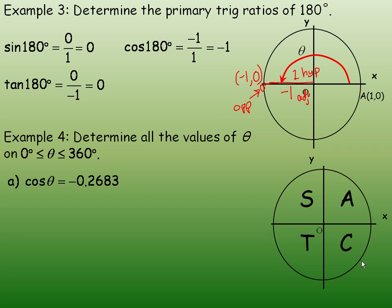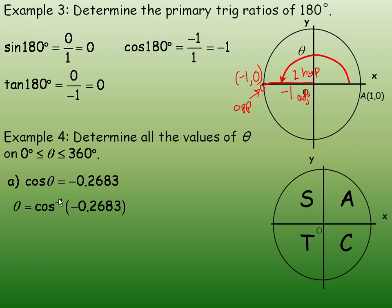Of course, if it's not positive in the quadrant, then it has to be negative. For example, you don't see a C in the second quadrant — sine is the only one positive there — so cosine would be negative in the second quadrant. Now, determine all the values of theta on 0 to 360 for which the cosine is negative 0.2638. We take our calculator and evaluate the inverse cosine to find where the angle is, and you should get the angle is about 106 degrees.